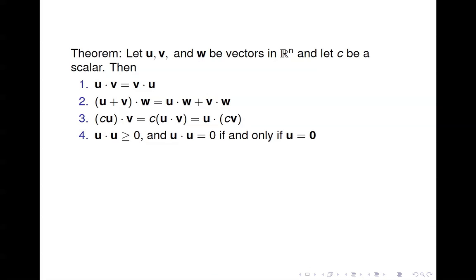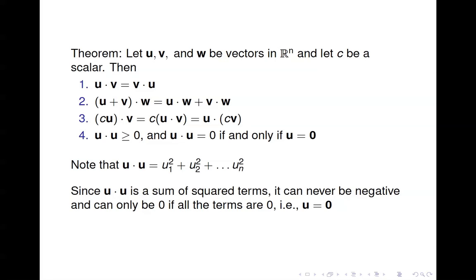Here's some properties of inner products. The fourth one is the most interesting because it discusses the inner product of a vector with itself. If we examine that, you see that u dot u is just u1 squared plus u2 squared plus dot dot dot plus un squared. So since we're adding up a bunch of squared terms, then it has to be non-negative.